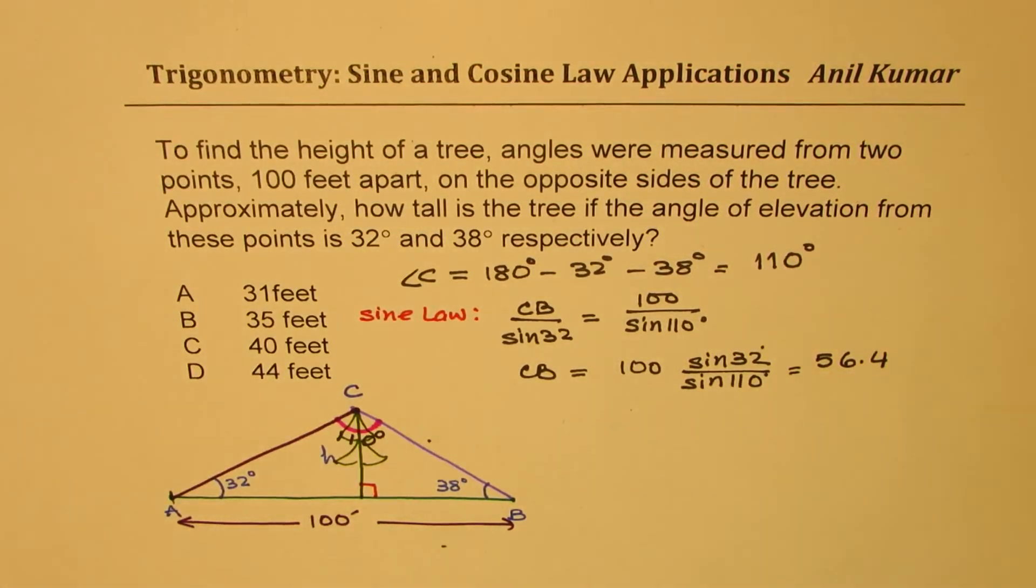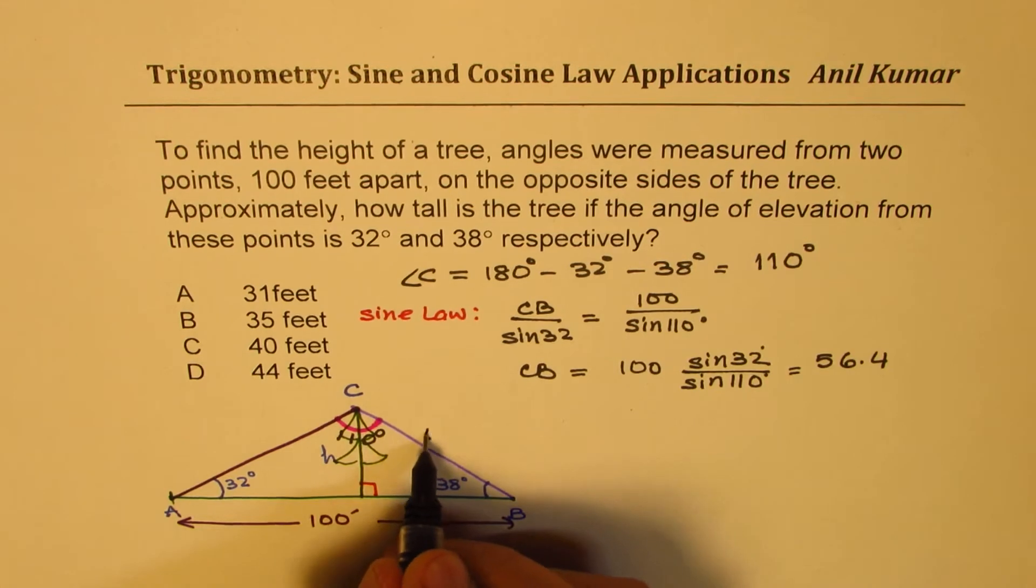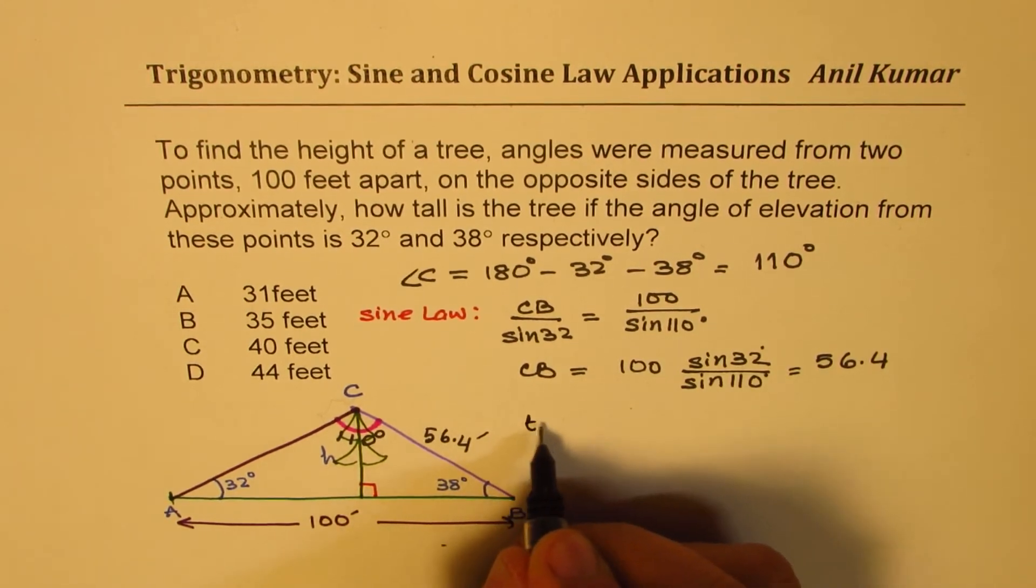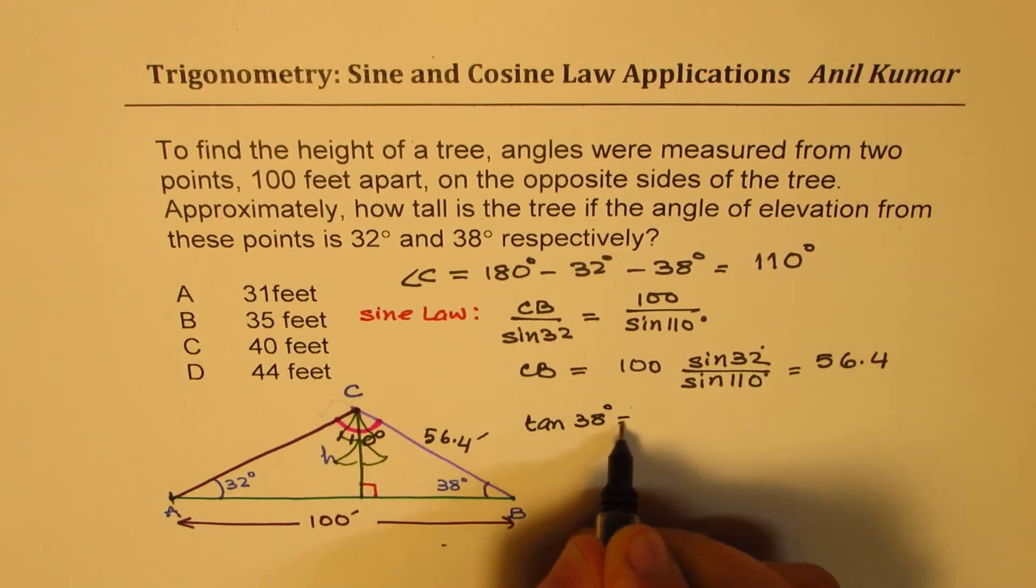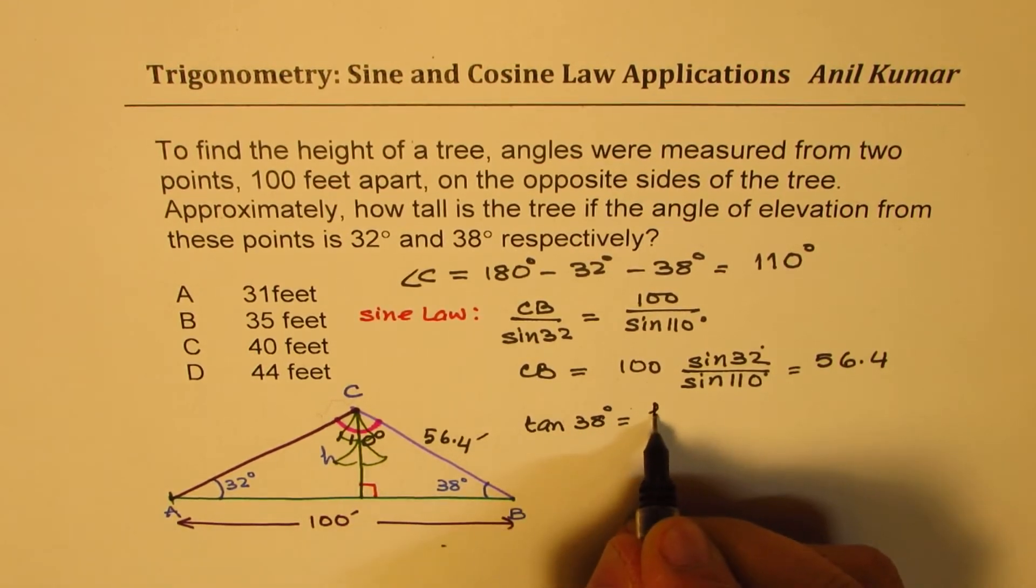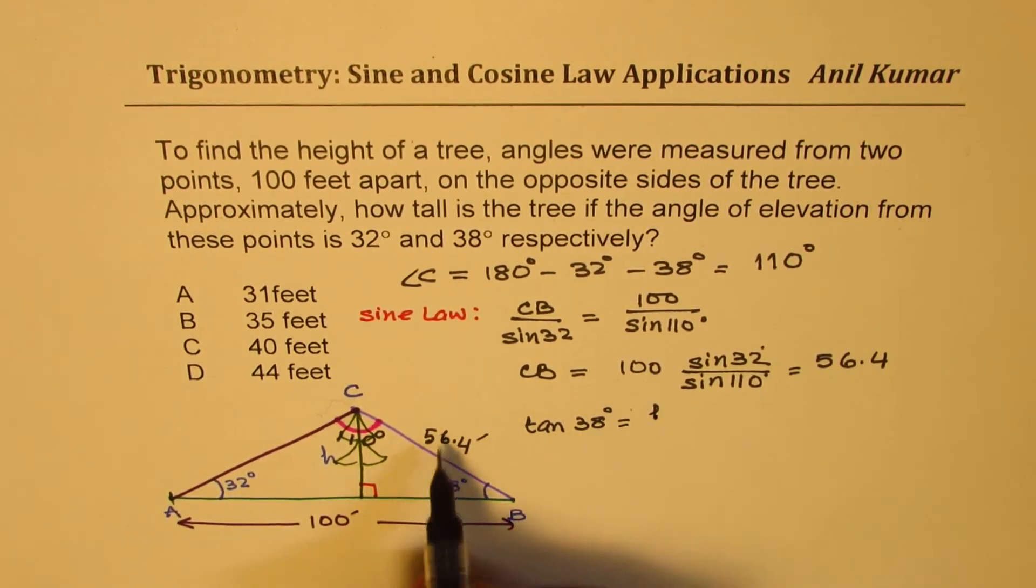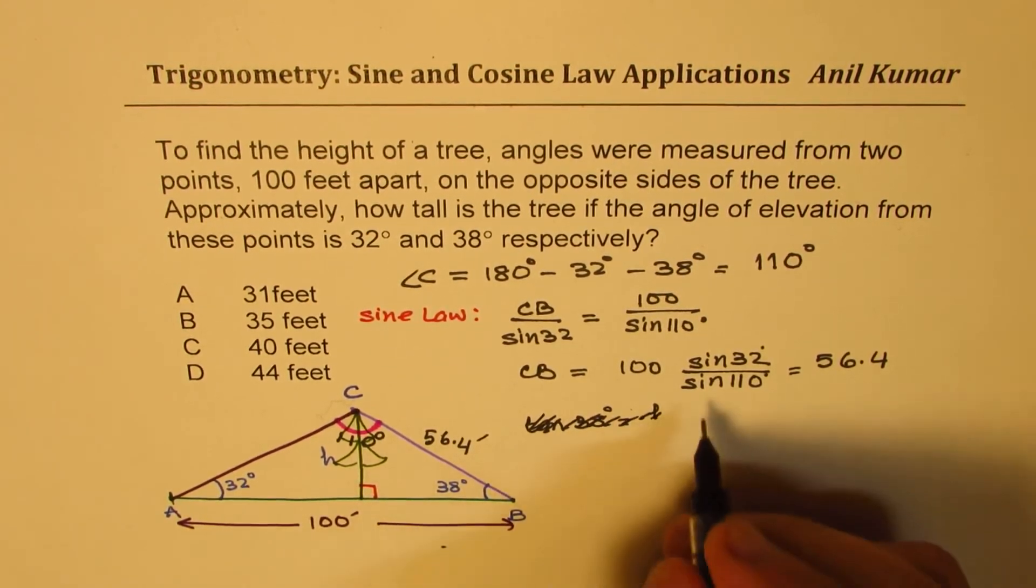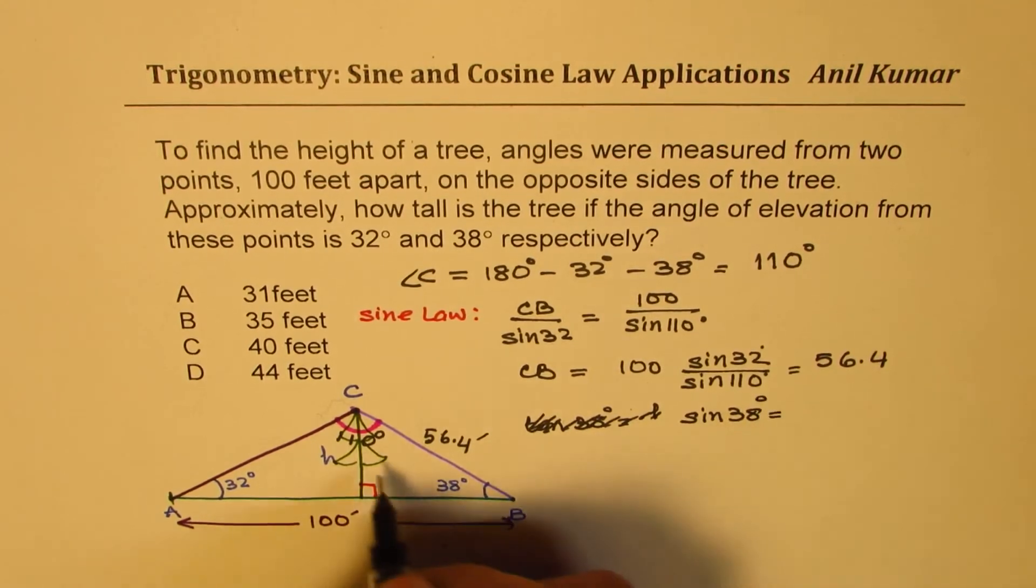Now to find the height, we can use tan ratio. We have tan of 38 degrees—actually, we know this side, so we should use sine ratio. So we have sine of 38 degrees.